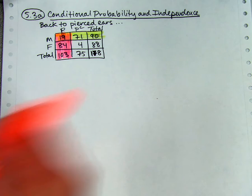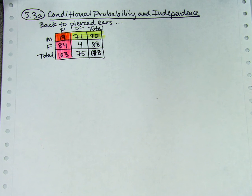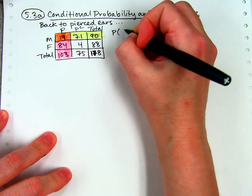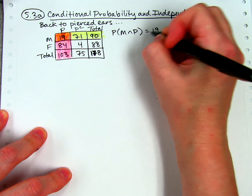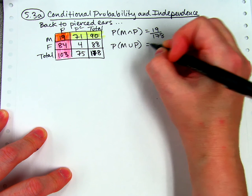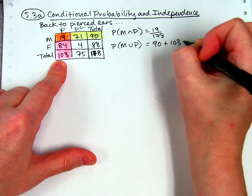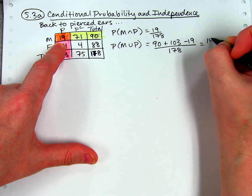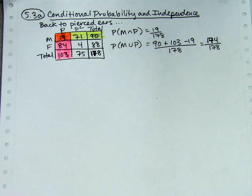So this first part is review of 5-2-B and is helpful for getting ready for the quiz. We looked at the Venn diagram or the table either way, and we talked about finding the probability of male and Pierce, which is both, was 19 out of 178. And the probability of male or Pierce was 90 plus 103 minus 19 people who got counted twice. That's 174 out of 178.